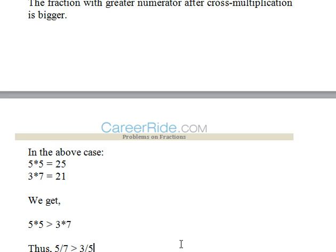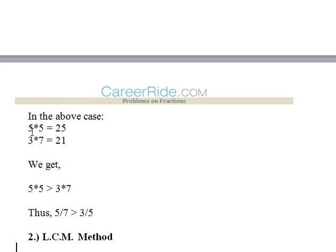We'll test it here. It's 5 times 5 and 3 times 7, so 25 is greater than 21. So 5/7 would be greater than 3/5.